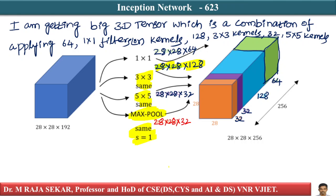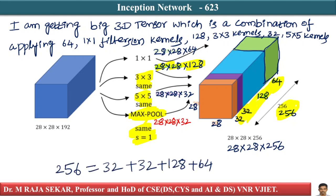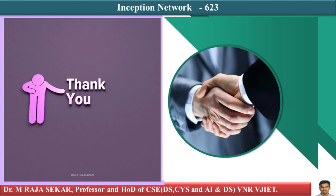Eventually the tensor we get is 28x28x256, where 256 is the sum of 32 plus 32 plus 128 plus 64. I am not compromising on which kernel size to use, and I'm not choosing between convolution or max pooling — in a single layer I am doing everything. So in the Inception Network, instead of choosing a kernel size or choosing between max pooling and convolution, we do everything. There is a small catch here involving Google's software engineering optimization, which I will discuss in lecture number 624. Thank you very much.